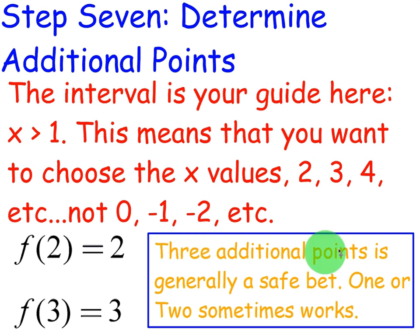Now, I put a note here. 3 additional points is generally a safe bet. 1 or 2 sometimes works. I say always 3. I know this is going to be a line, so I only actually need 1 or 2 afterwards.